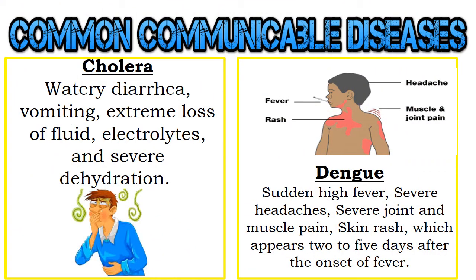Cholera is transmitted through contaminated water or undercooked food. You may have watery diarrhea, vomiting, extreme loss of fluid, electrolytes, and severe dehydration. The last are dengue, malaria, or Japanese encephalitis — you may have sudden high fever, severe headaches, severe joint and muscle pain, and skin rash which appears 2–5 days after the onset of fever.